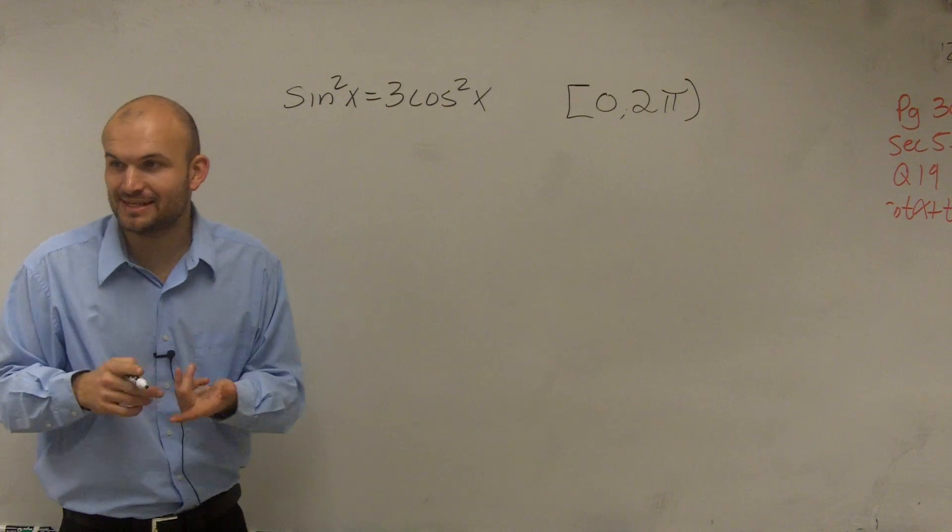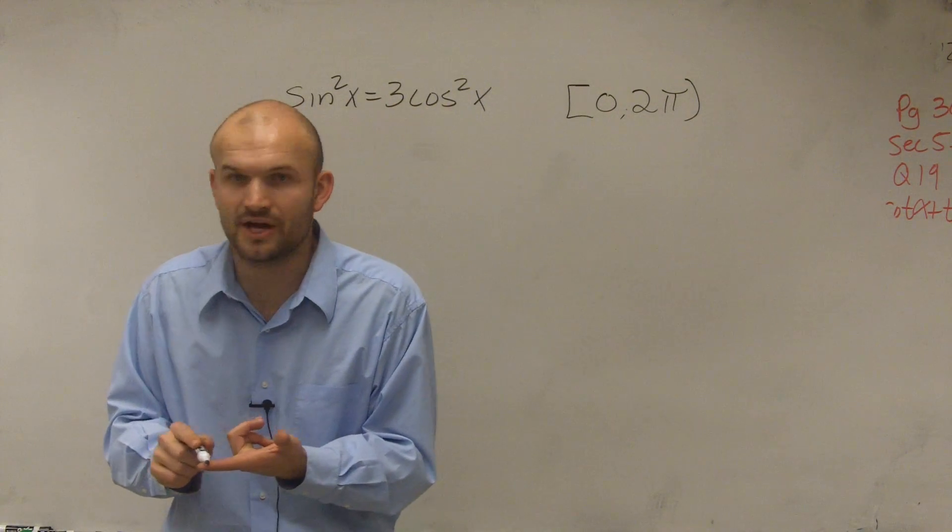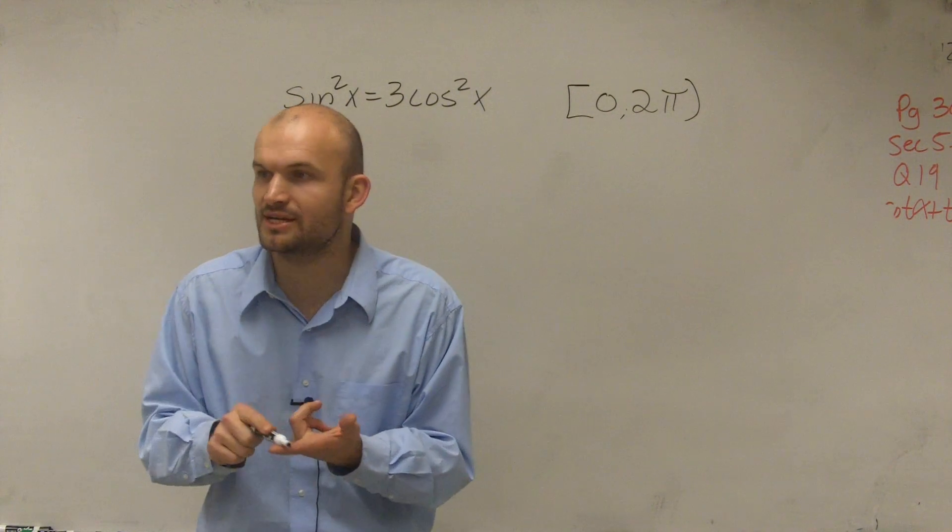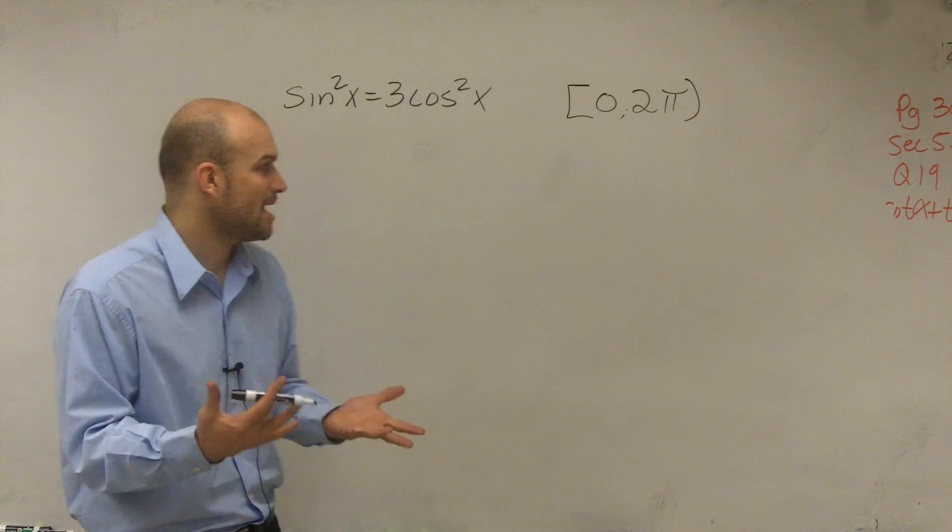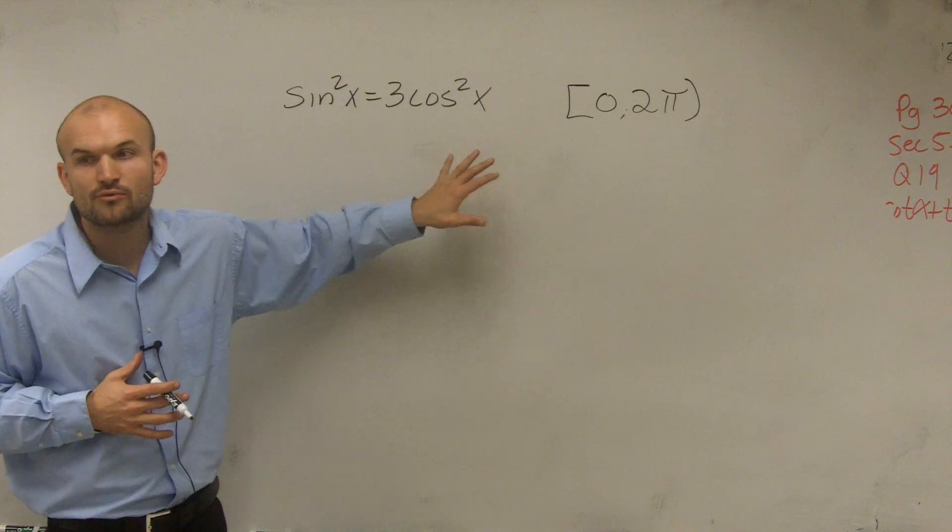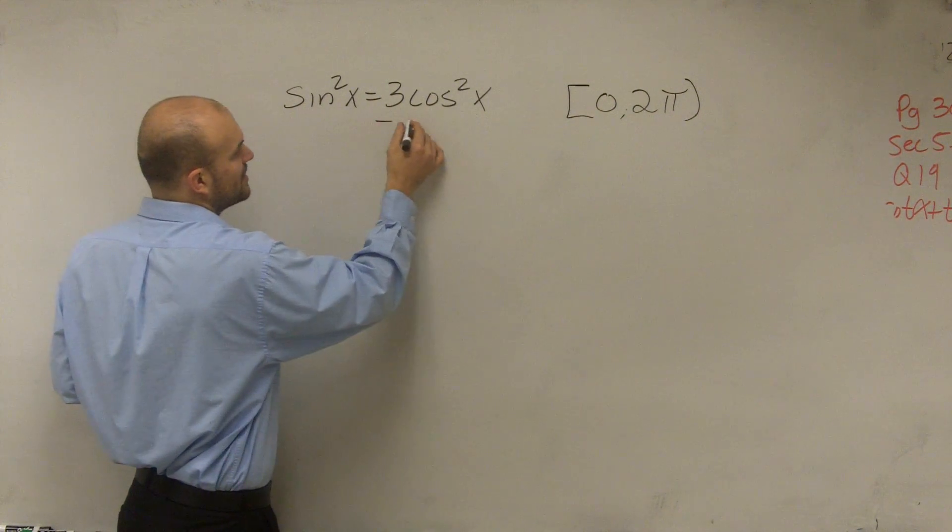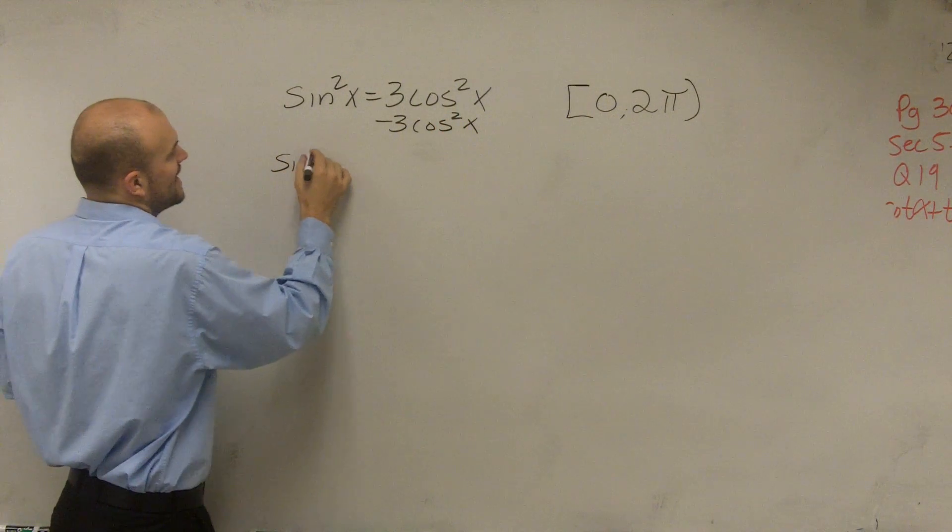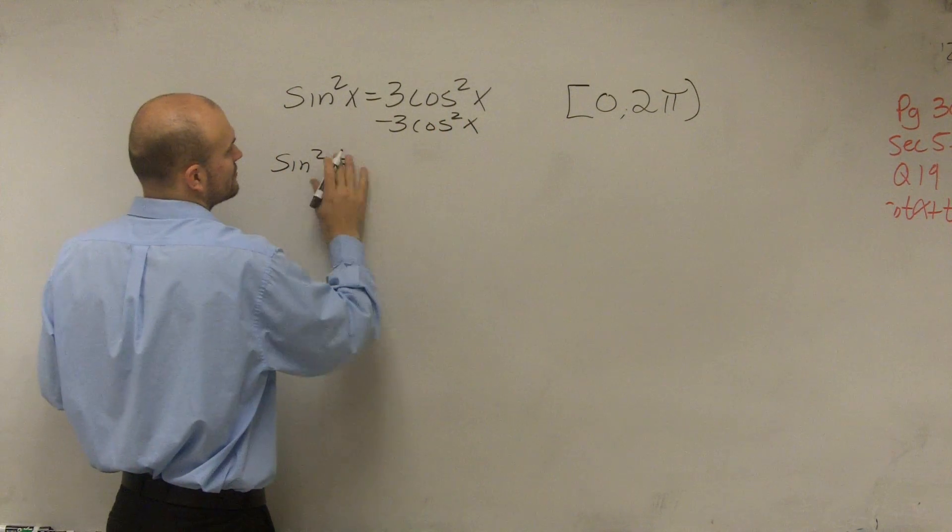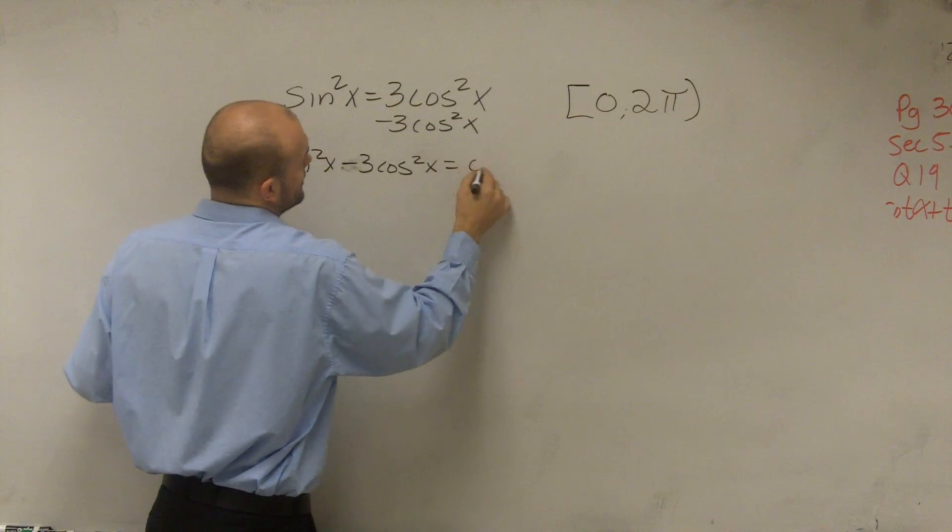So what we need to do is we need to evaluate, we can't evaluate for two different functions because the cosine value is going to be dealing with your x-coordinate, and the sine is going to be dealing with your y-coordinate. So somehow what we need to do is be able to rewrite these as the same trig function. And so the first thing I'm going to do is I'm going to get these on the same side. So therefore I have sine squared of x minus 3 cosine squared of x equals 0.